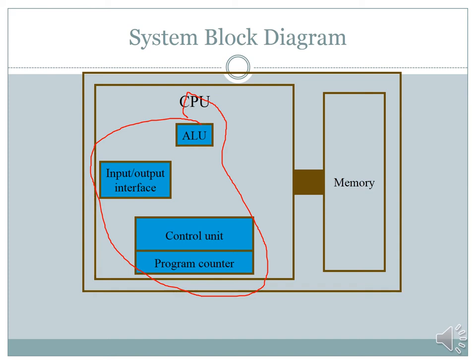So in a CPU, the whole system comprises the Arithmetic Logic Unit, the input/output interface, the Control Unit, and the Program Counter. The Control Unit interprets instructions, and the Program Counter keeps the address of the next instruction.